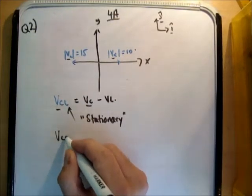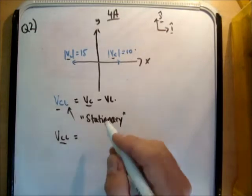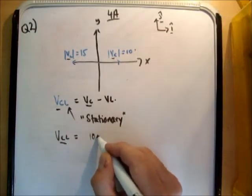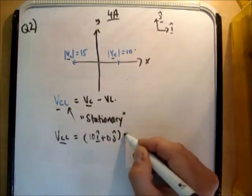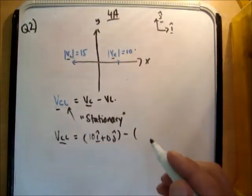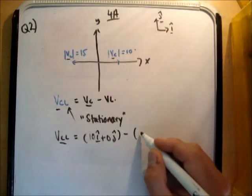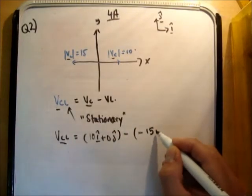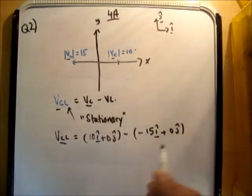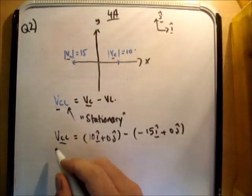So we're going to get Vcl is equal to Vc minus Vl. Now Vc is 10i hat plus 0j hat, and we have minus. Now you just got to be careful with your signs of course, and we're going to get negative 15i hat plus 0j hat. So always use your brackets like so, and you will never make a mistake.